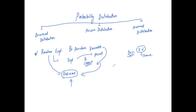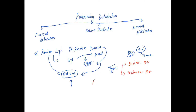Let me change the annotation color. Types of random variable: the first one is the discrete random variable, and the second one is the continuous random variable.